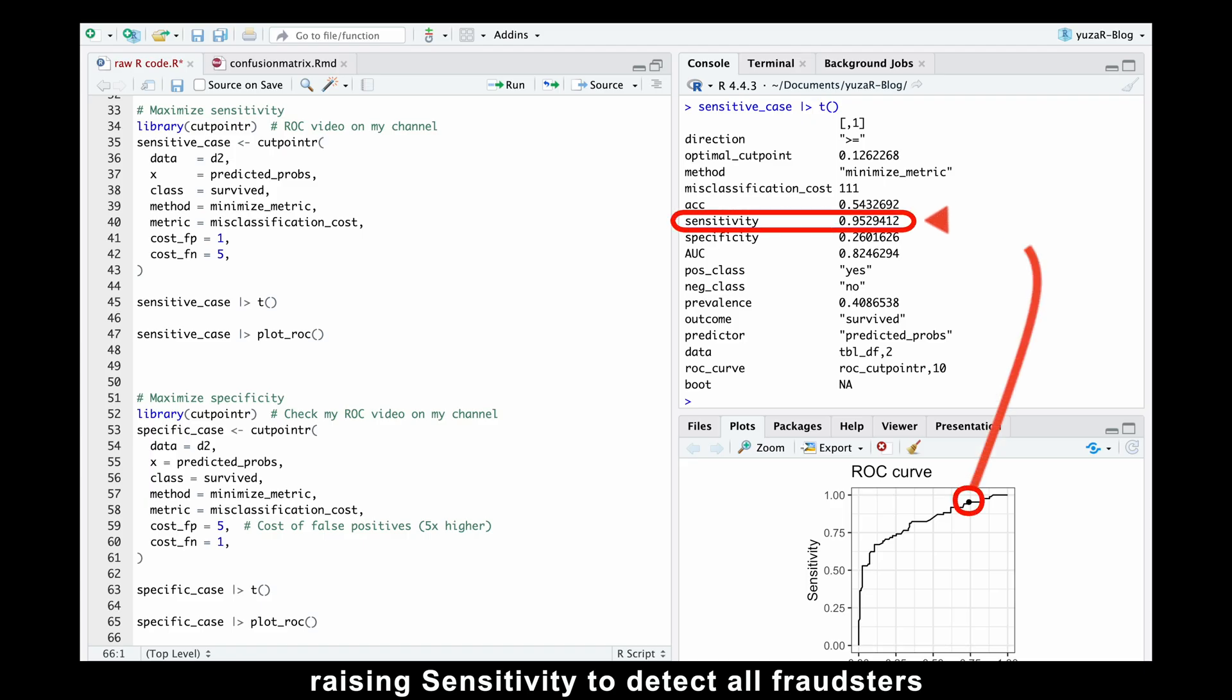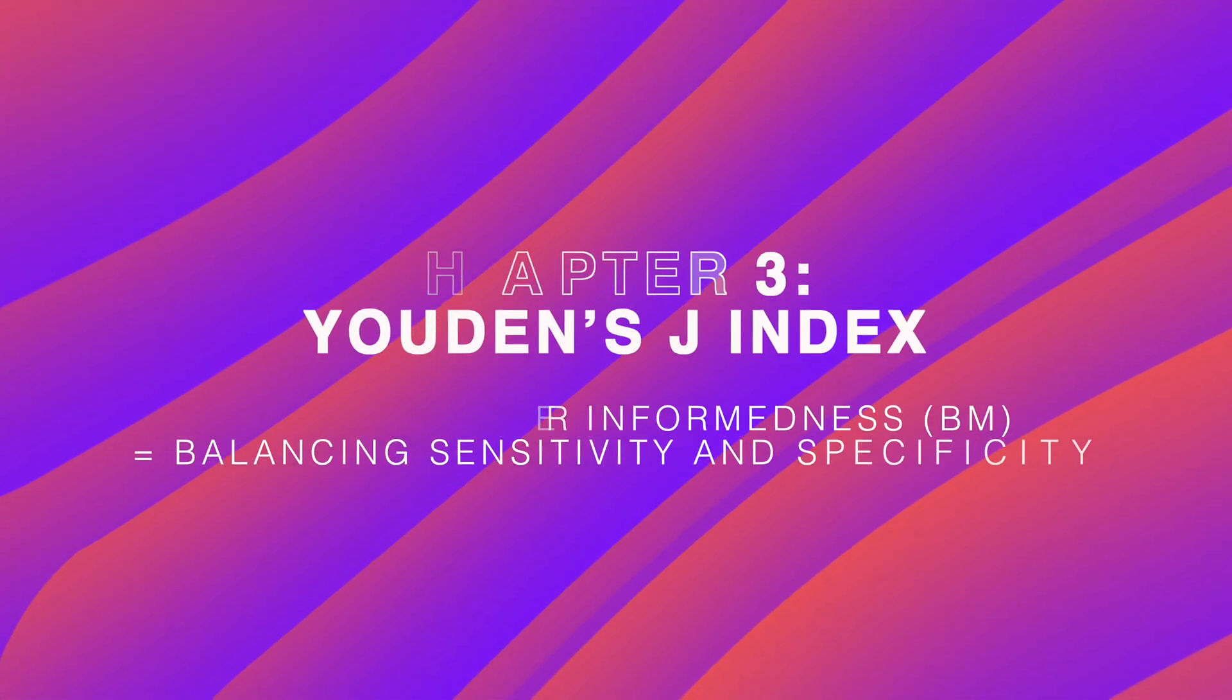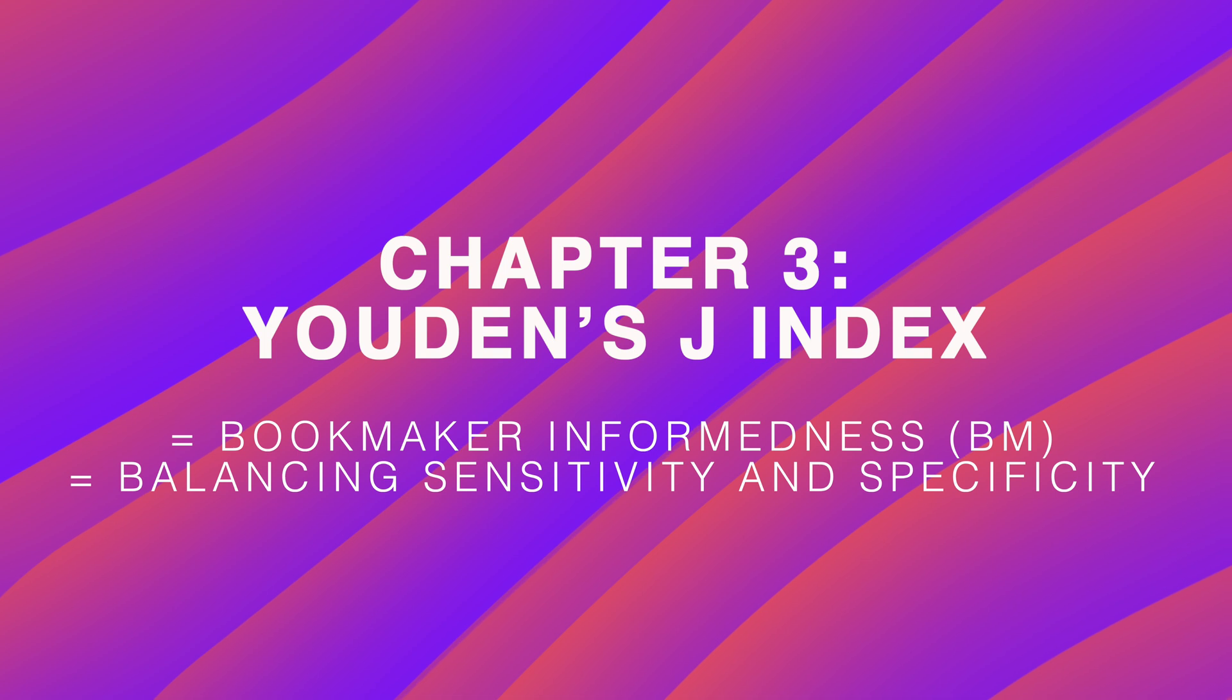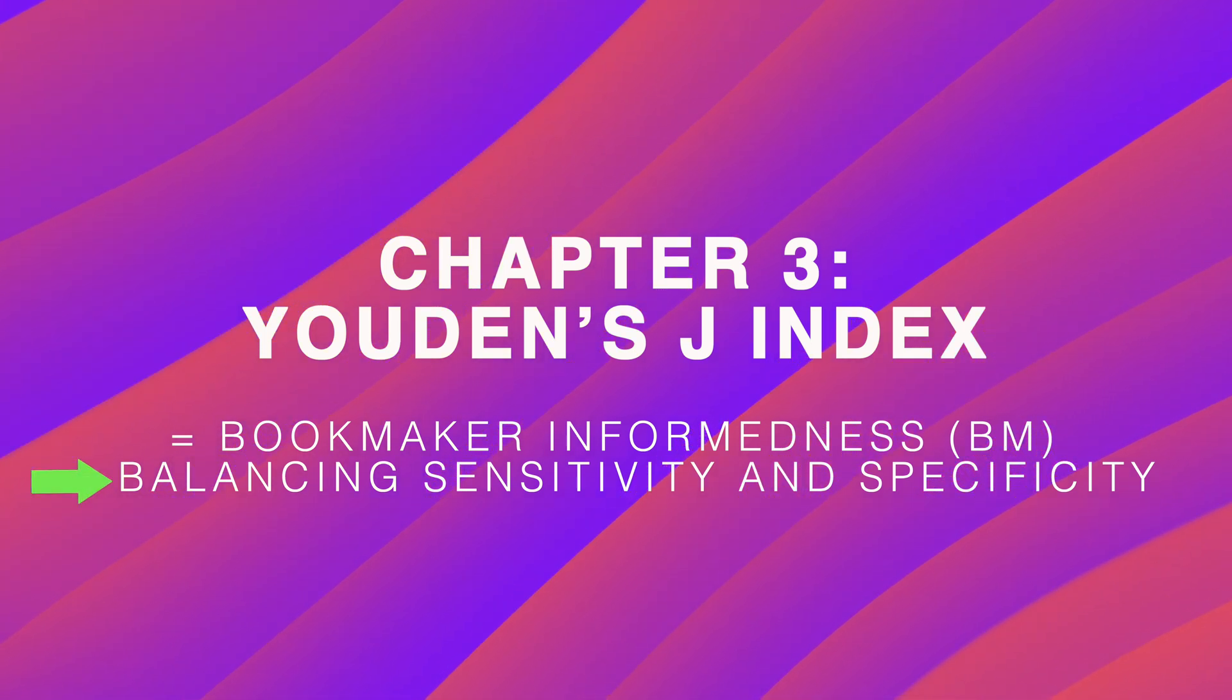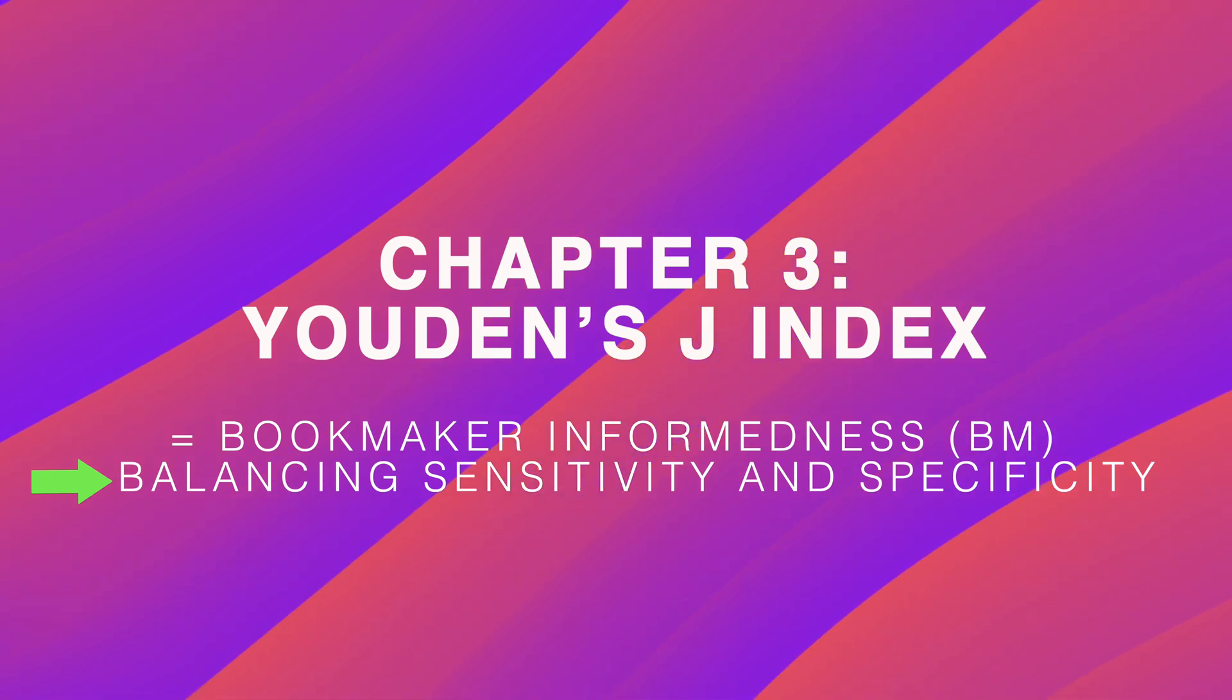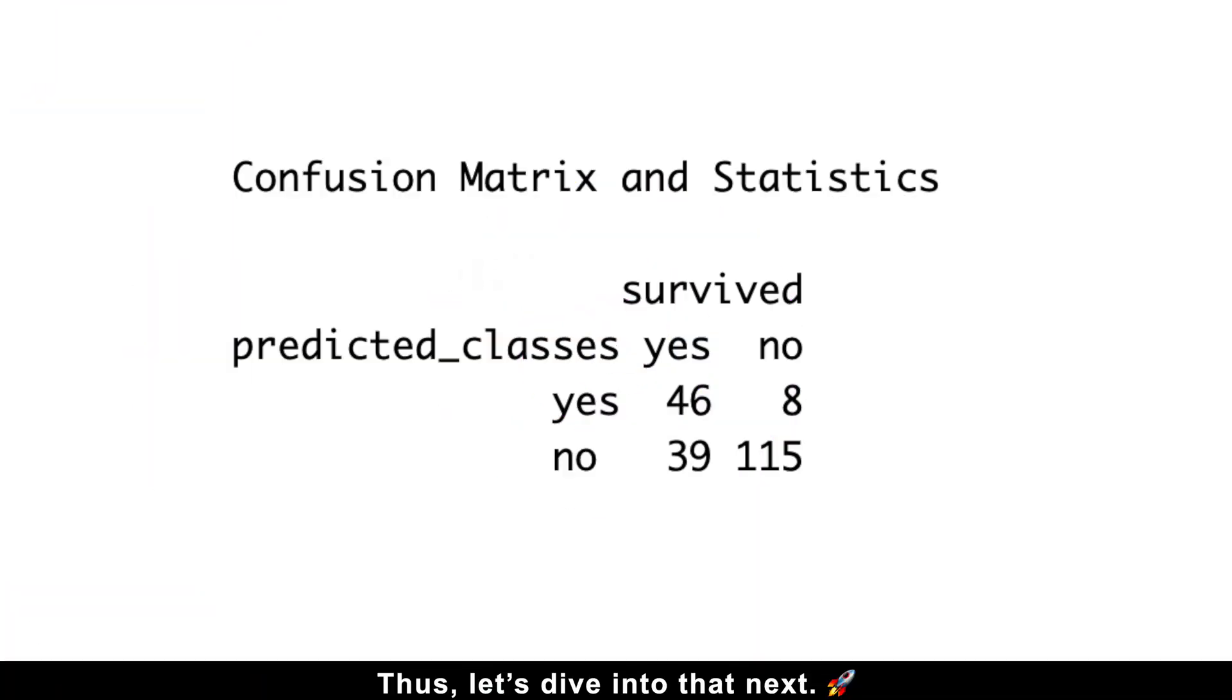Raising sensitivity to detect all fraudsters risks increasing false alarms, while boosting specificity to protect legitimate transactions might miss some fraudulent activity. And that's where Youden's J-Index comes in. Youden's index helps us to find a sweet spot between sensitivity and specificity, maximizing overall model effectiveness. Thus, let's dive into that next.